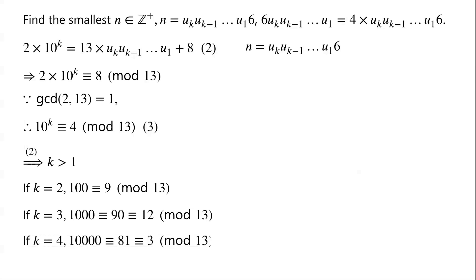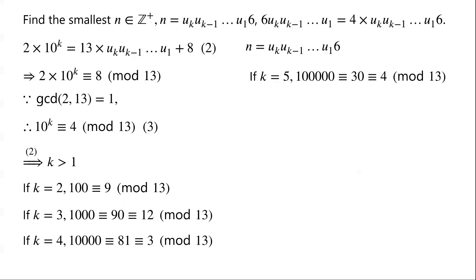If k=4, then 10^4 = 10,000 = 100×100 ≡ 9×9 = 81 ≡ 9 (mod 13), so k cannot equal 4. If k=5, then 10^5 = 100,000 = 10,000×10 ≡ 3×10 = 30 ≡ 4 (mod 13). So k=5 satisfies equivalence relation 3.